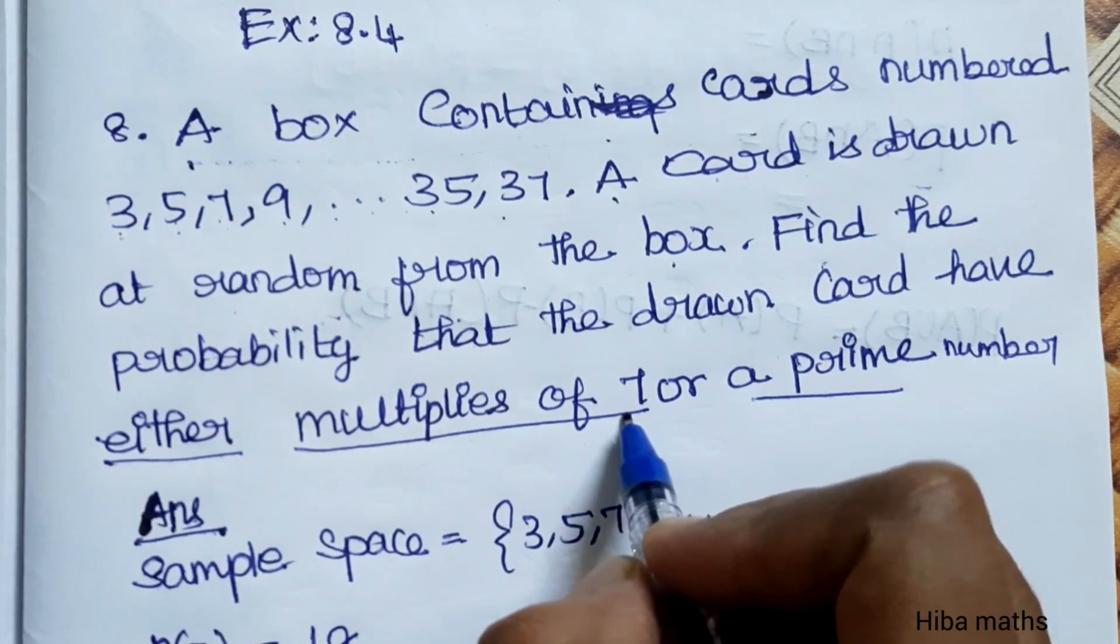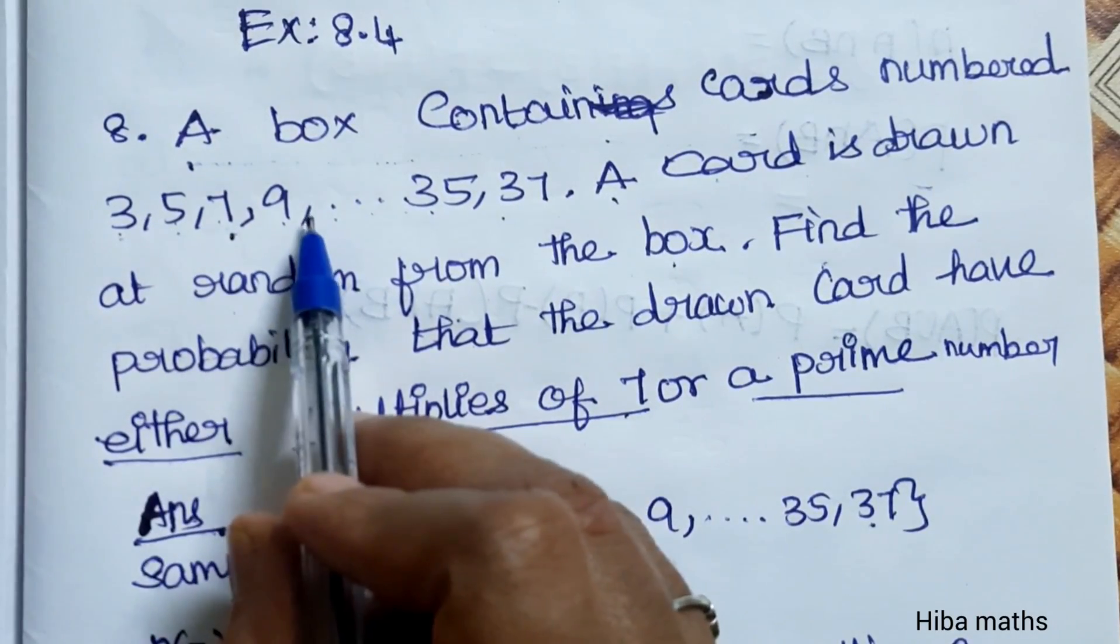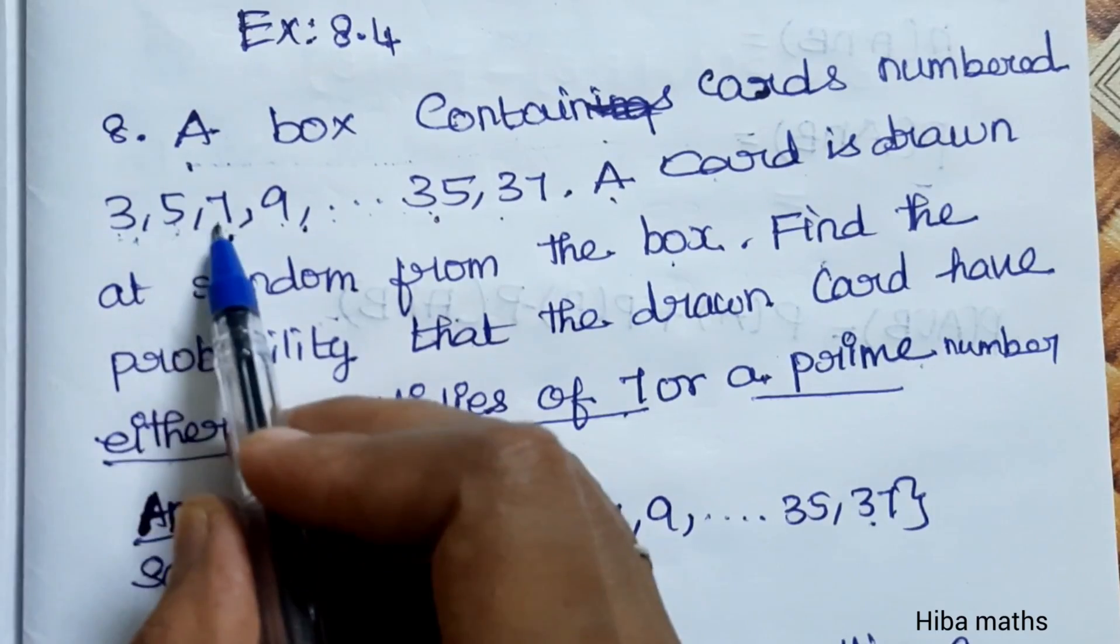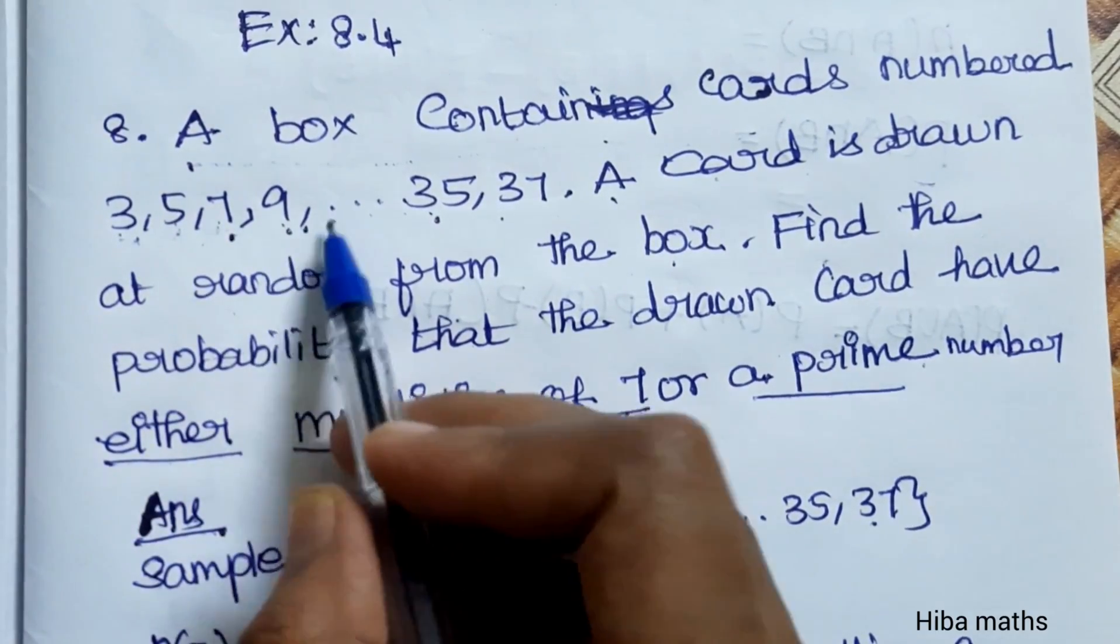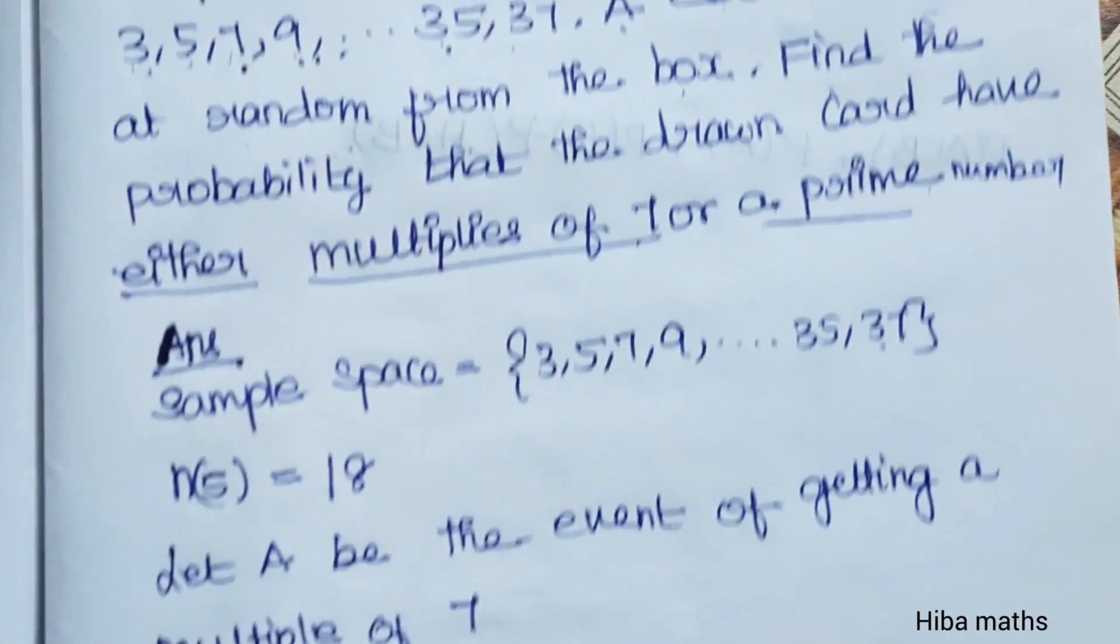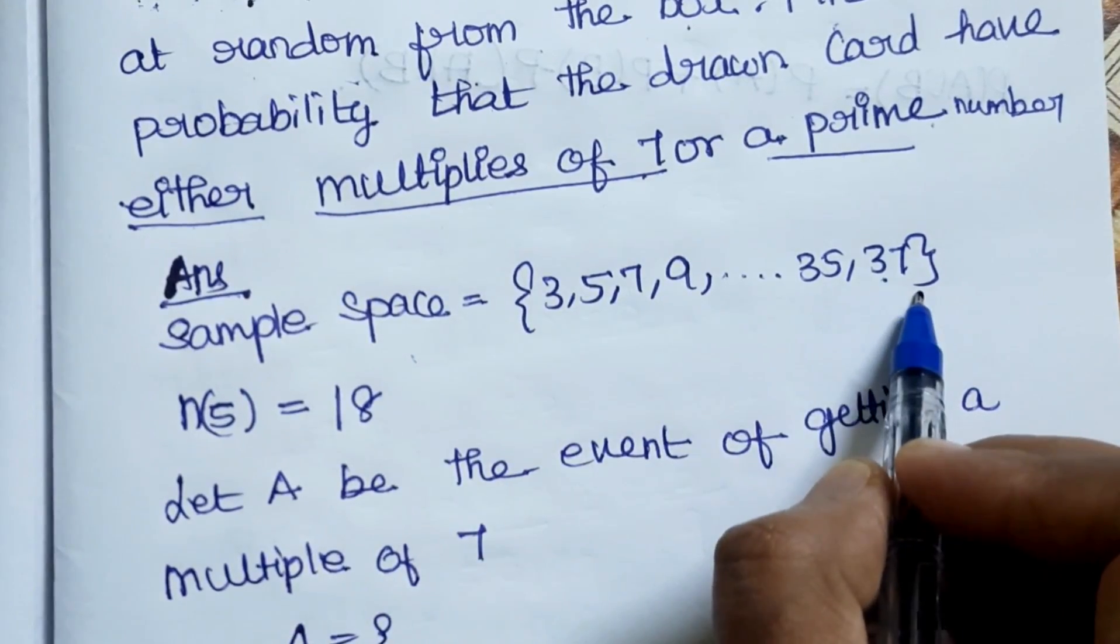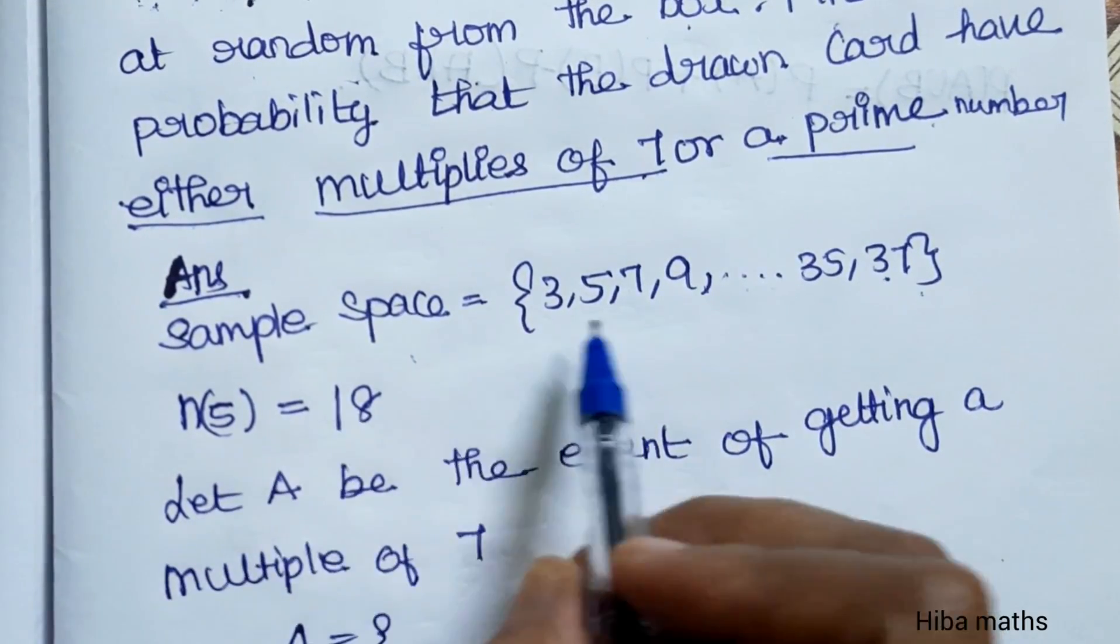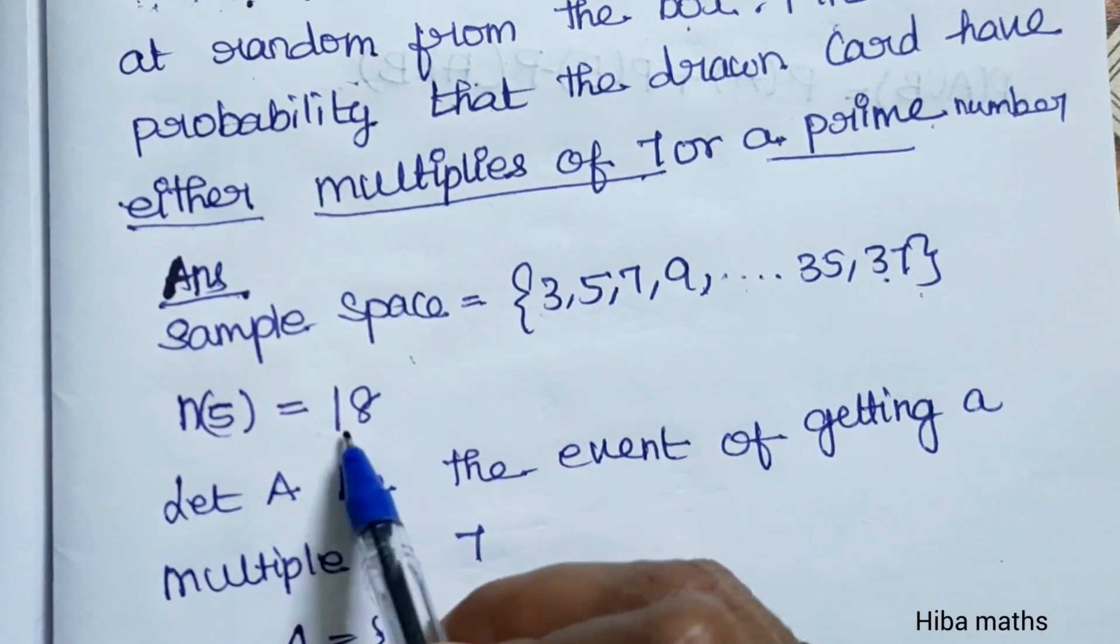For example, 7 or a multiple like 7, 21, 35. Prime numbers like 3, 5, 7, 9 up to 35. Sample space: the numbers are 3, 5, 7, 9 up to 35. If you count, n(S) is 18.